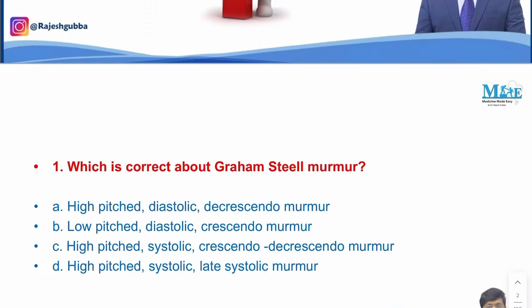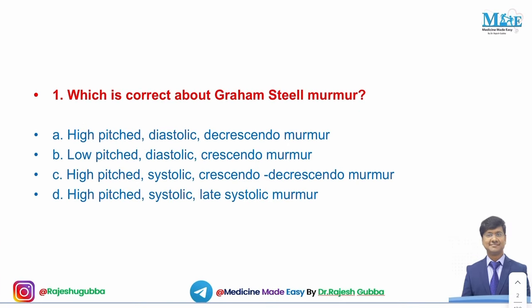The first question: which of the following is the correct statement about Graham Steele's murmur? Options: high-pitched diastolic decrescendo murmur; low-pitched diastolic crescendo murmur; high-pitched systolic crescendo-decrescendo murmur; high-pitched late systolic murmur. The correct answer is the high-pitched diastolic decrescendo murmur.